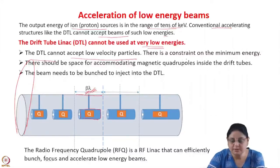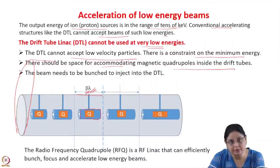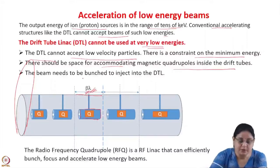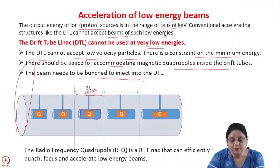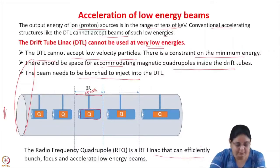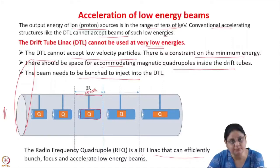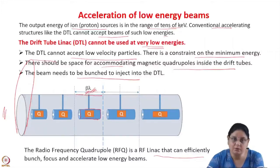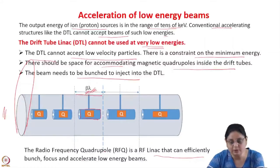The DTL cannot accept low velocity particles. There is a constraint on the minimum energy and quadrupoles cannot be accommodated inside the drift tubes. Also, the beam needs to be bunched before injection into the DTL, so a buncher is required before the DTL. The radio frequency quadrupole is an RF linac that can efficiently bunch, focus, and accelerate low energy beams. It is a very efficient structure — it can accept a DC beam, perform bunching itself very efficiently, and simultaneously focus and accelerate the low energy beams.